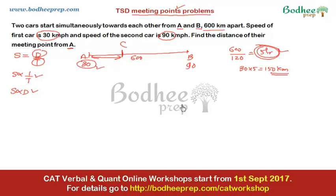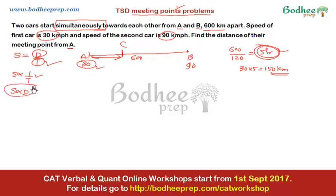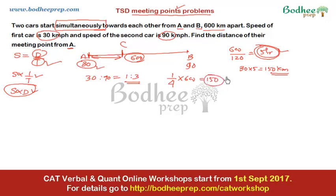The other approach: since both start simultaneously, the time taken is the same for both. When time is constant, distance is proportional to speed. Their speed ratio is 30:90 = 1:3, so when they meet, distances traveled are in ratio 1:3. The total distance is 600, so the person from A travels 1/4 × 600 = 150 kilometers. This is another way of tackling such questions.